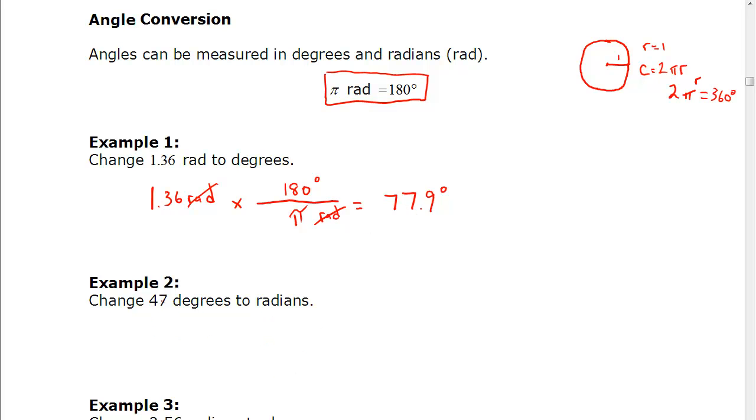In the next example, we have 47 degrees, and we need to change it to radians. And I'm actually going to do this one on the calculator for you. But if we have 47 degrees, we want to multiply that, we want to cancel degrees, we want to finish with radians. We have 180 degrees, π radians, and we're going to get some answer there.